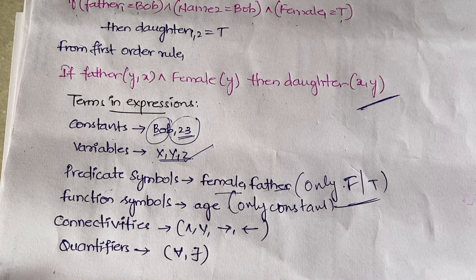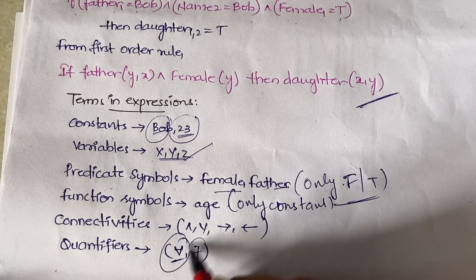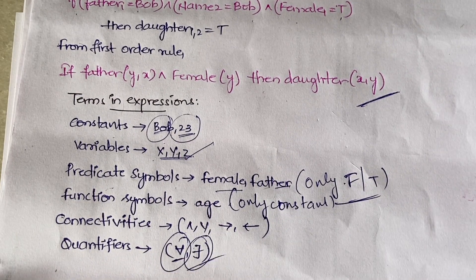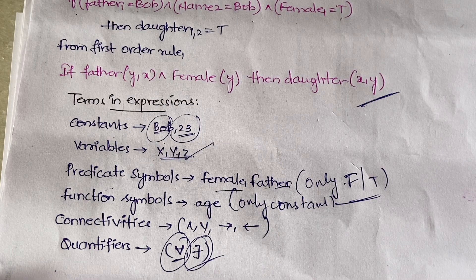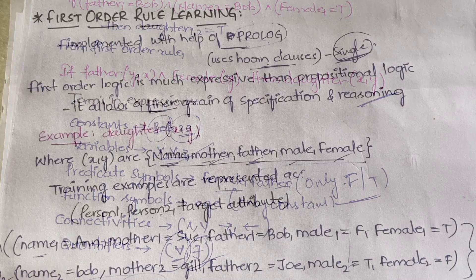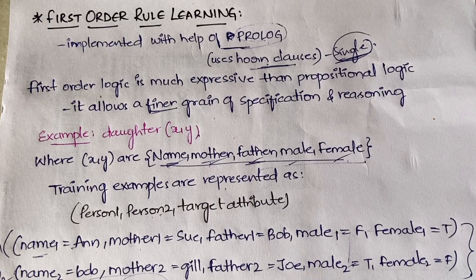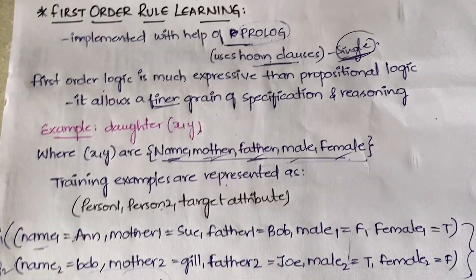Then there are connectives — such as or, and, implication — and quantifiers. Quantifiers such as 'for all' and 'there exists' show whether something applies to the whole set, a part of it, or none of it. These quantifiers show you the quantity. This covers the basics of first order rule learning.